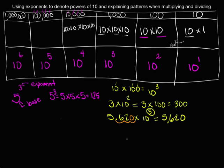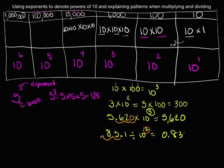Now let's try a division problem. Let's divide 83.1 by 10 squared. When we multiply digits by a power of 10, the digits move to the left on the place value chart. When we divide, those digits move to the right on the place value chart — essentially, the decimal moves to the left. Since it's 10 squared, the digits shift two places to the right, or equivalently the decimal moves two places to the left. So we end up with 0.831.